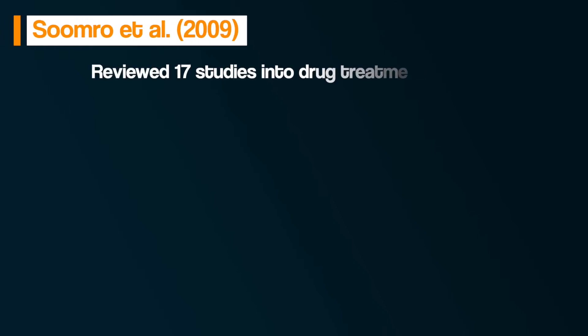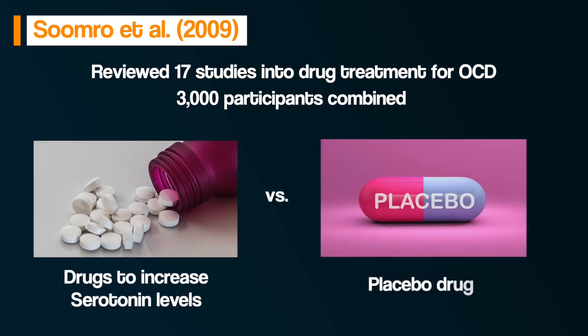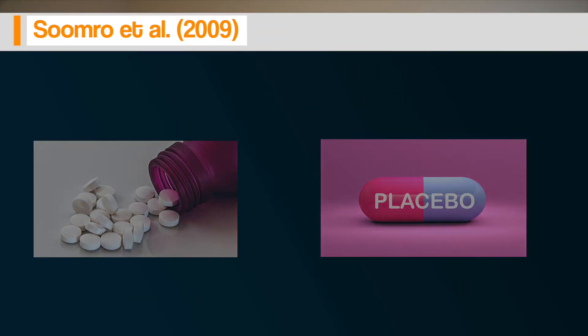What research points to the potential influence of serotonin in OCD? Soomro et al. in 2009 reviewed 17 studies into drug treatment for OCD. These 17 studies combined over 3,000 participants, and compared drugs that affected serotonin levels in the brain with placebos. The results showed that drugs that altered serotonin levels were more effective in reducing OCD symptoms — basically, OCD patients given drugs that increased serotonin reported fewer OCD symptoms.